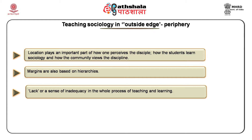Based on his experience of teaching sociology at what he refers to as the outside edge — the periphery of the non-metropolitan world, the Government Degree Colleges in Uttaranchal — Singh argues that his location plays an important part not only in how he perceives the discipline, but also in how students learn sociology and how the community views the discipline. This could also have an important impact on the perception and growth of the discipline itself. Singh argues that margins do not form a homogeneous entity, as margins are also based on hierarchies. Centers and margins are not so much geographical spaces but rather the complexity of ideas.